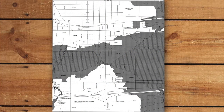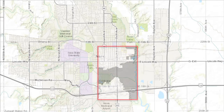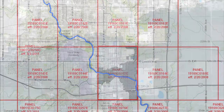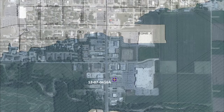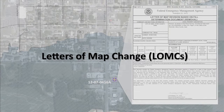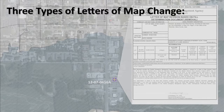Publishing a revised FIRM panel is expensive. Consequently, FEMA typically will not reprint a map unless the changes affect a large area or multiple map panels. A more common method used for revising the FIRM is for FEMA to issue a letter that describes the map change. These letters are broadly referred to as letters of map change, or LOMCs. There are several different types of letters of map change that are each used for a specific type of situation.